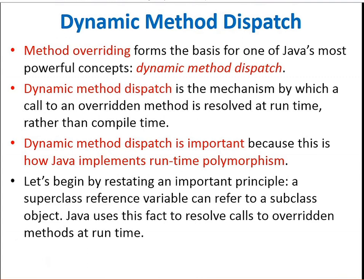Now, what is dynamic method dispatch? Method overriding forms the basis of one of Java's most powerful concepts: dynamic method dispatch. Dynamic method dispatch is the mechanism by which a call to an overridden method is resolved at runtime rather than compile time. Dynamic method dispatch implements runtime polymorphism in Java.